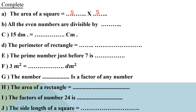Letter B: all even numbers are divisible by what? Yes, divisible by 2. Excellent — divisible by 2. Any number is divisible by another if the remainder of the division is zero.